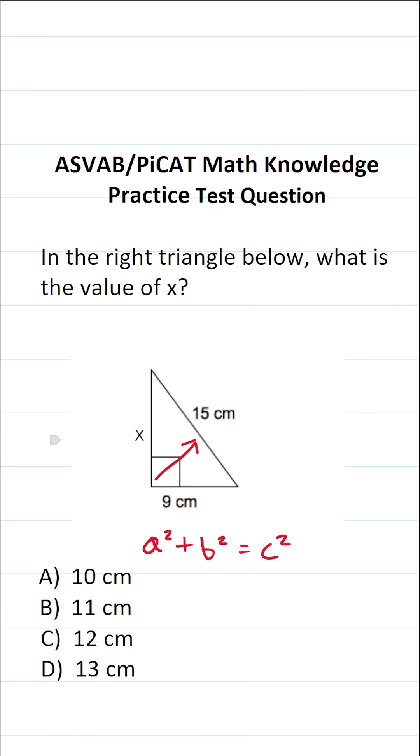The hypotenuse is easy to identify because it's always directly across from the right angle. So in this case, I know c is 15. That means x and 9 centimeters are the legs. I'll let a be x and b be 9.